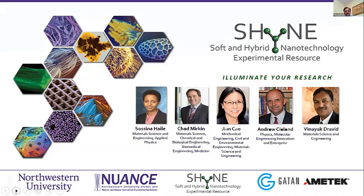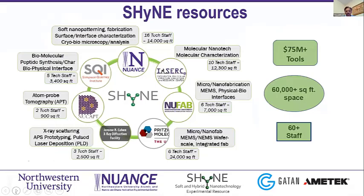The lead institution under SHINE is the Nuance Center organizing today's event. We have six other facilities, ranging from Sam Stoops and Simpson Query Institute — where John Rogers is also a part — to IMSERC, a molecular nanotechnology facility that received considerable recognition with Fraser's Nobel Prize a few years ago. We also have fabrication, atom probe tomography run by David Seidman — an amazing capability for atomic-scale structure and composition combined with focused ion preparation. Altogether, we represent over $75 million in tools, thousands of square feet of space, and a strong staff.